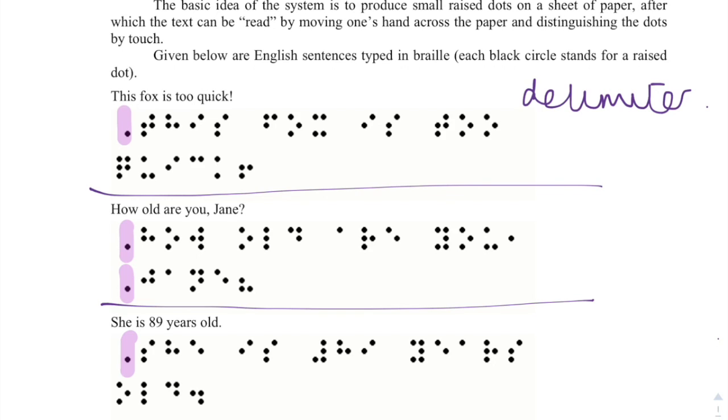Another interesting thing to note is that there appears to be a one-to-one mapping between each word in the English written sentence and in the Braille. In this first sentence, we have five words, and in the Braille we have five segments.